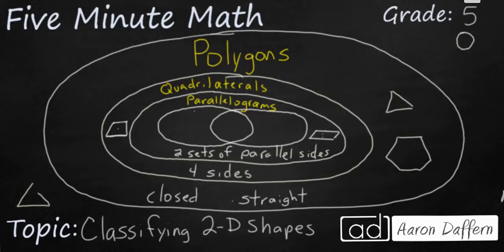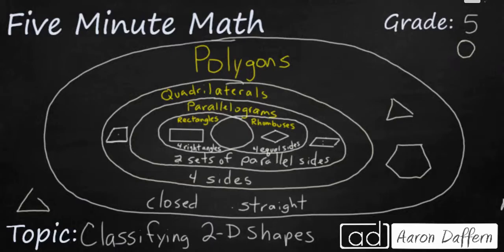These types of special parallelograms are rectangles and rhombuses. Rectangles are parallelograms that have four right angles. So you see these four corners right here these are square corners and that's what makes a shape a rectangle.